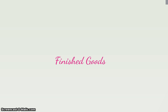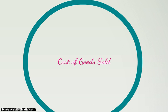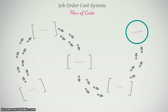When we're done with a job and all those costs are totaled up, we credit work in process and debit finished goods to move those costs over, because now those products are finished and we're just waiting to sell them. Once we do sell them, we move the costs out of finished goods and they become cost of goods sold — crediting finished goods and debiting cost of goods sold. And that's how costs flow through a job order cost system.